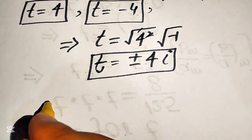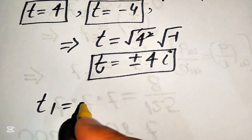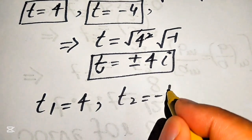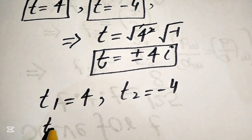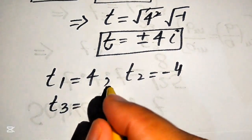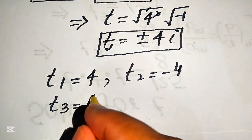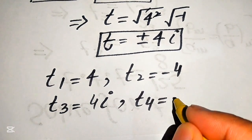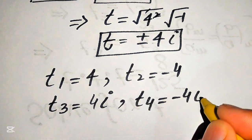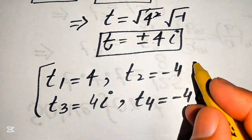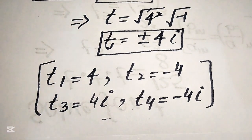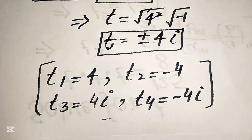Finally, the four roots of the equation are: t₁ equals 4, t₂ equals minus 4, t₃ equals 4 iota, and t₄ equals minus 4 iota. These are all four roots, and this is the final answer. Thank you for watching — please subscribe for more videos.